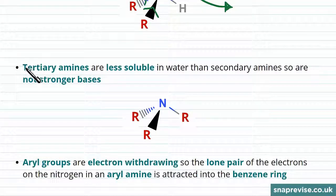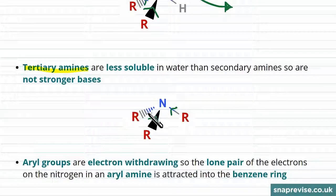Finally, we'll look at tertiary amines, and you would expect the basic effect of tertiary amines to be even stronger, as we now have three R-groups donating electrons towards the nitrogen. However, tertiary amines are less soluble in water than secondary amines, so this means they're not actually stronger bases, because they don't dissolve in the water as easily.